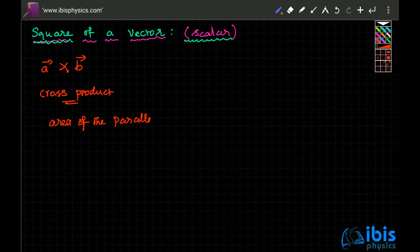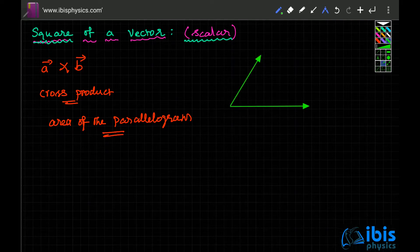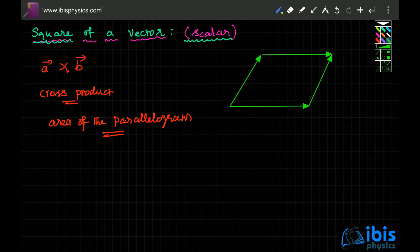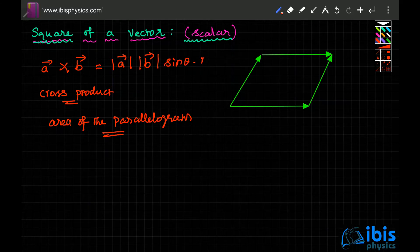Suppose vector a is this vector and vector b is this vector. Then a cross b gives you the area of the parallelogram bounded by them — copy each vector and paste it to form the parallelogram arms. The cross product is defined as |a||b| sin θ into n-cap.